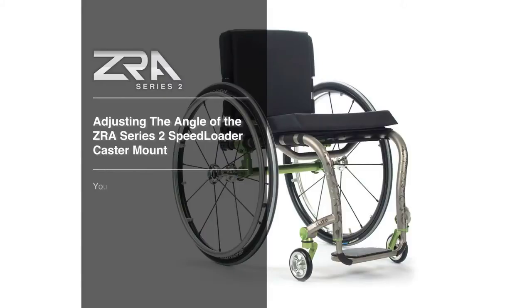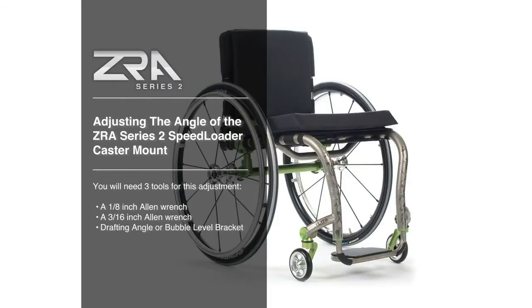Adjusting the Angle of the ZRA Series 2 Speedloader Caster Mount. If you have changed the seat height of your ZRA Series 2, you will need to adjust the angle of the caster mount to be sure that it is at a 90 degree angle to the floor. This will allow the chair to track straight.